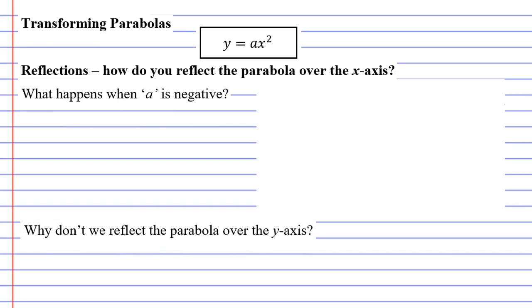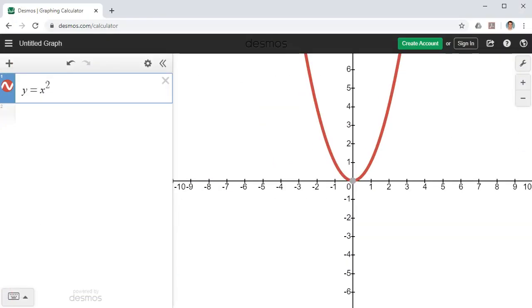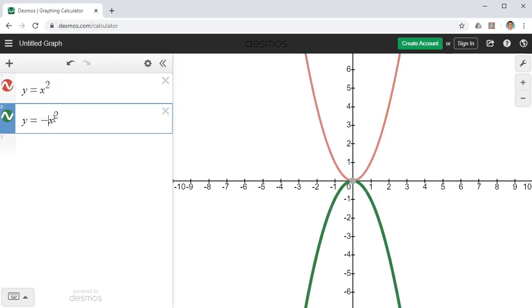Let's move on to our next transformation, which is a reflection. So we're going to learn how to reflect the parabola over the x-axis. So bringing up Desmos, if I want to reflect this parabola over the x-axis, it's really easy. I just take the exact same equation and I put a minus sign out the front of it.